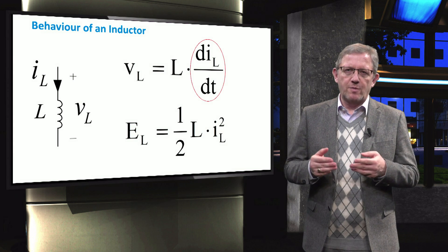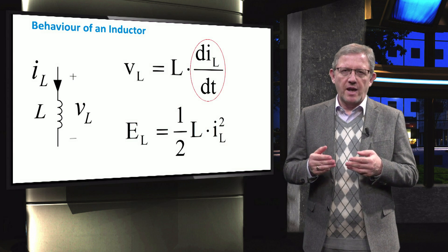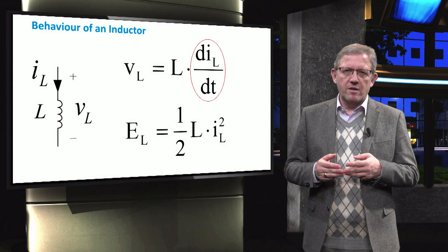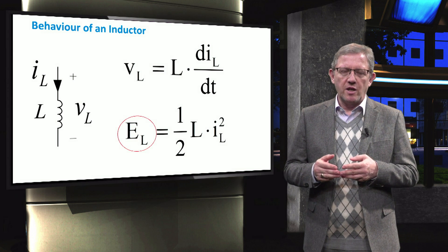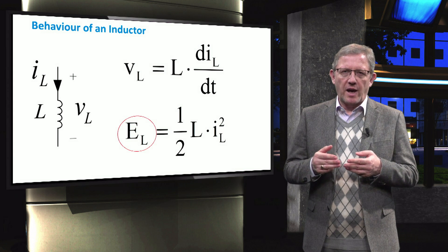The inductor is smoothing out the rate of change of the current that is reflected as the voltage across the inductor. Similarly, the inductor is able to release or absorb its stored energy which depends on the inductance and on the square of the current passing through the inductor.